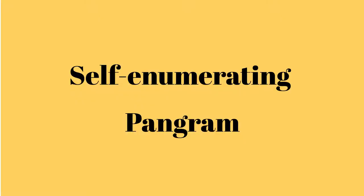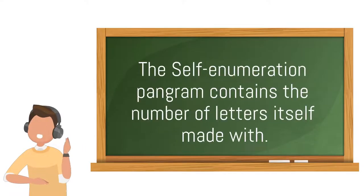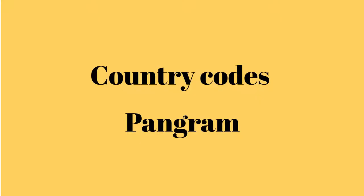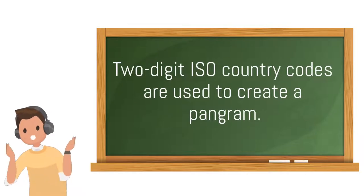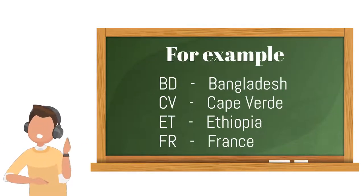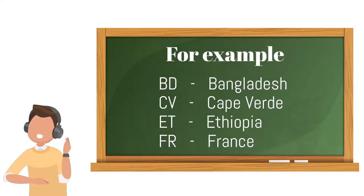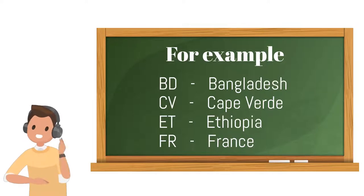Self-enumerating pangrams: the self-enumerating pangram contains the count of each letter it is made with. Country codes pangrams: here, two-digit ISO country codes are used to create a pangram. For example, BD for Bangladesh, CV for Cape Verde, ET for Ethiopia, FR for France, and so on.